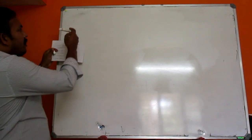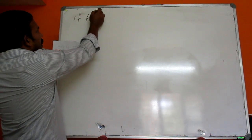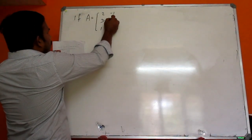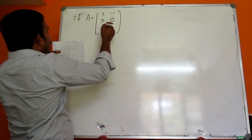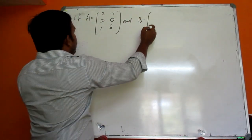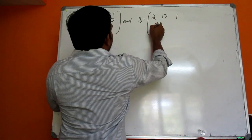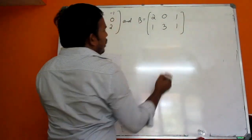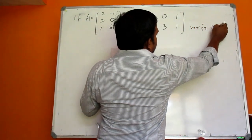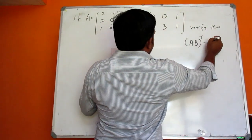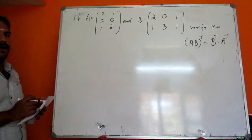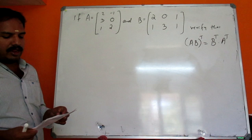Now, if A is equal to [2, 3, 1; -1, 0, 2] and B is equal to [2, 0, 1; 0, 1, 3; 1, 1, ...], verify that AB whole transpose equals B transpose into A transpose.